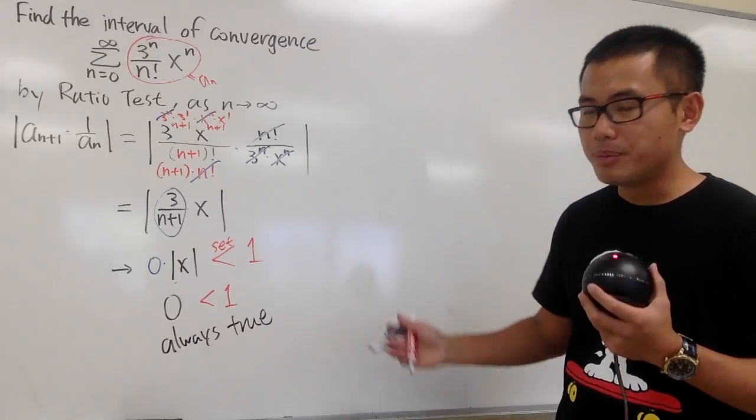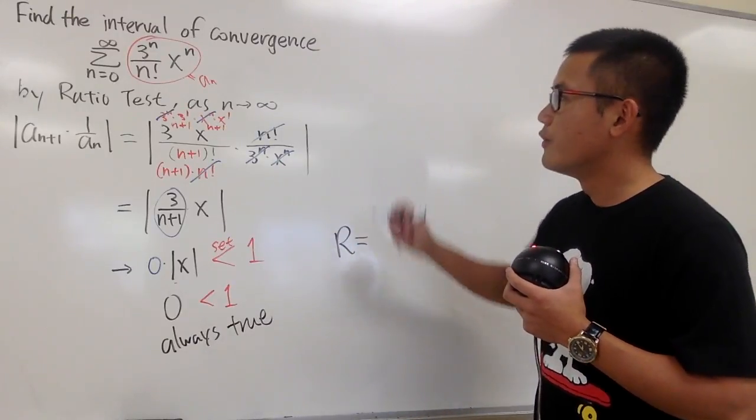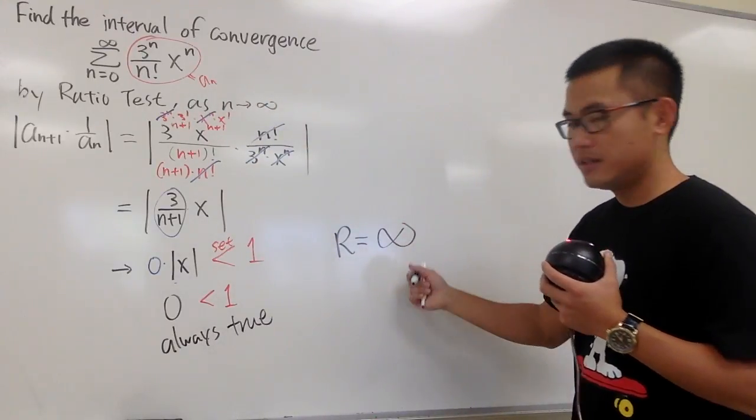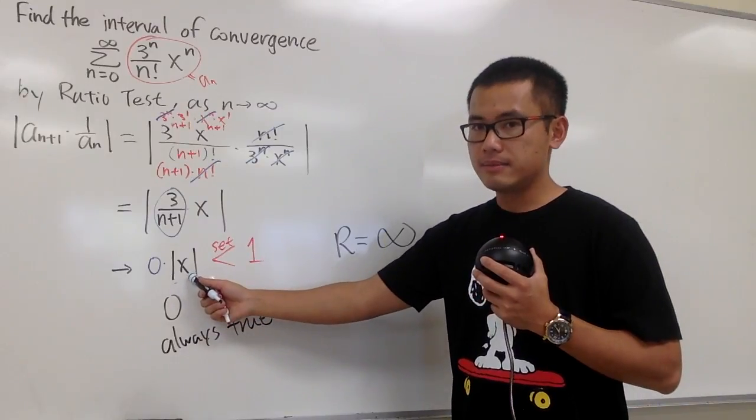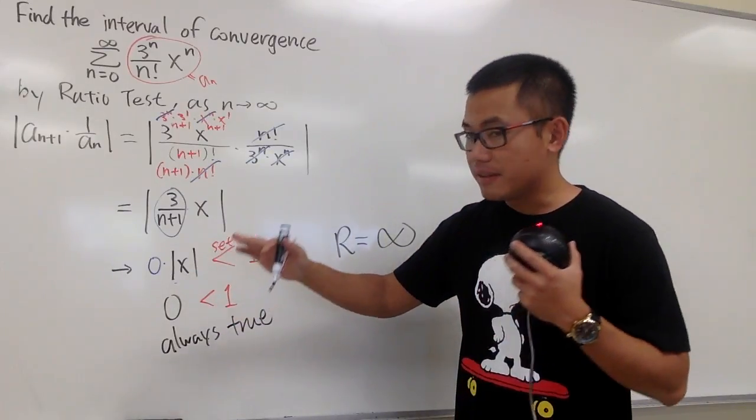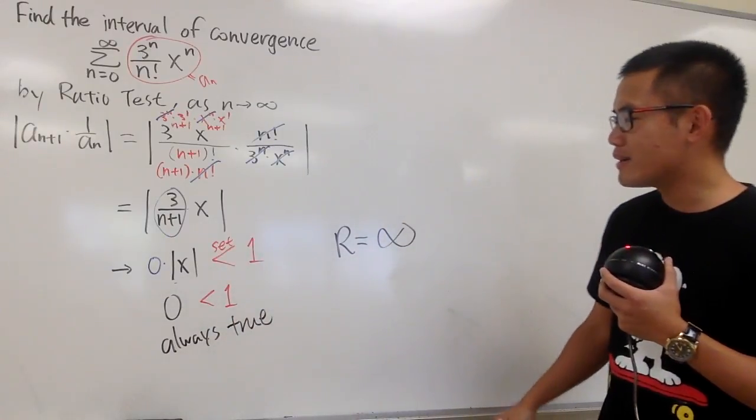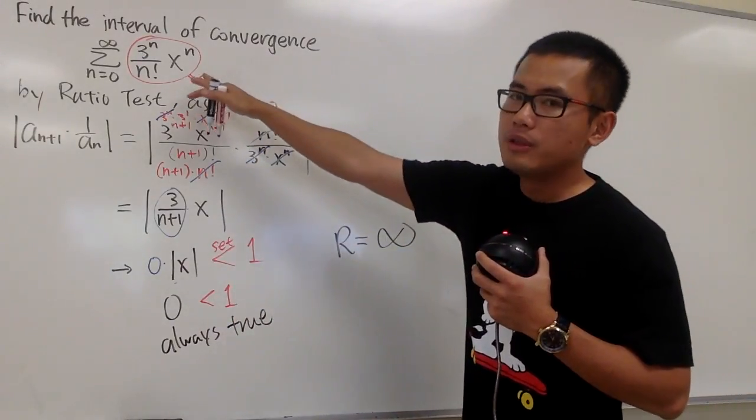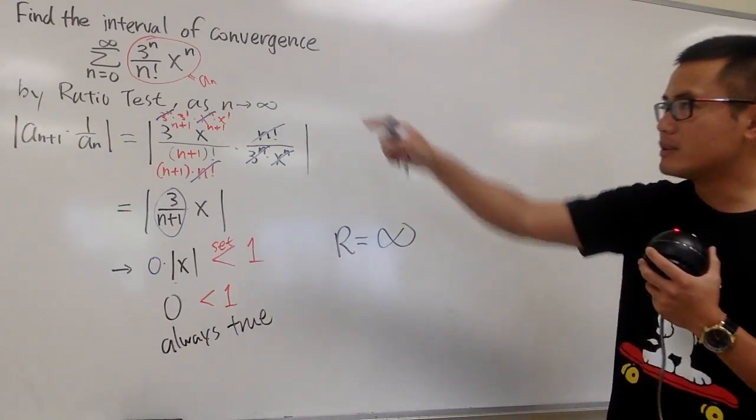And this is going to be an indication that the radius of convergence for the power series is infinity, meaning that you can use any value for x. You can use negative 10, negative 500, you can use 72. It doesn't matter, plug into the original, the series will converge. The radius of convergence for that power series is infinity.